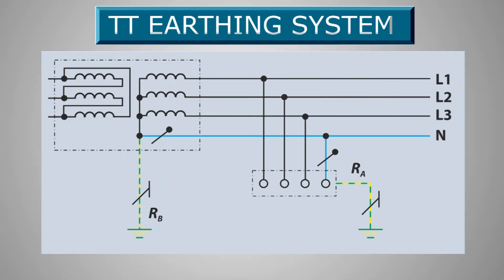Let's look at the TT earthing system as an example. In this earthing system, connection to the supply source is directly connected to earth, and the load end or installation metalwork is also directly connected to the earth. Therefore, in case of an overhead line, the mass of the earth will be the return path for the line. The neutral and earthing conductor must be separated through the installation, because the power distributor only provides a supply neutral or protective conductor for the connection to the consumer.